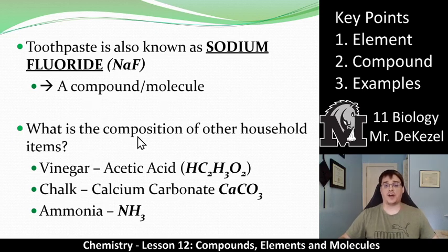Some other household items. So vinegar is acetic acid given here. Chalk is calcium carbonate, CaCO3. And ammonia is NH3, all combinations of atoms which make them compounds. So everything that we live with is a compound. The table is a compound. I'd like you to remember maybe a few of these. You don't have to remember every single one of these. But knowing a few examples of compounds would be ideal.